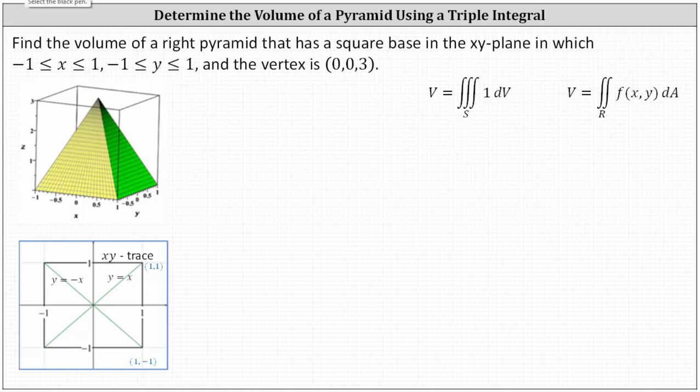We want the volume of the pyramid. If we take a look at the xy trace, we have a two-by-two square since both x and y are on the closed interval from negative one to one. If we project the edges of the pyramid onto the xy trace, we get these green lines given by y equals negative x and y equals x.